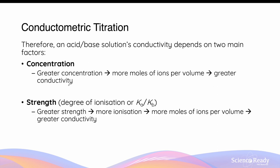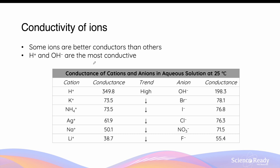The second factor is strength. Strength of an acid or base is related to the degree of ionization. When we say acids and bases are stronger, we mean they have a greater degree of ionization. A greater proportion of acid-base molecules will produce ions, leading to more moles of ions per volume and thus greater conductivity.